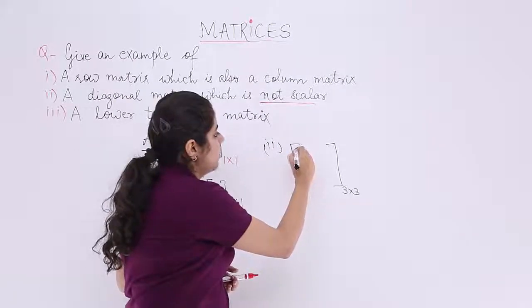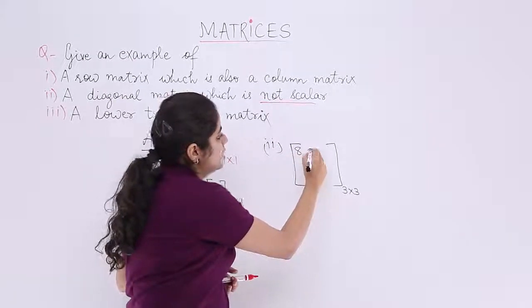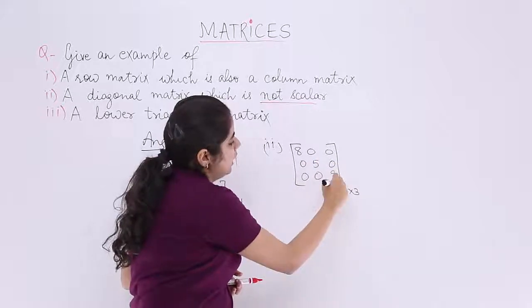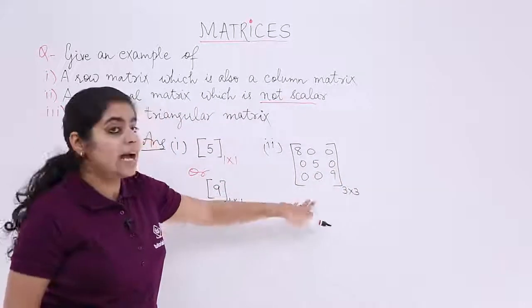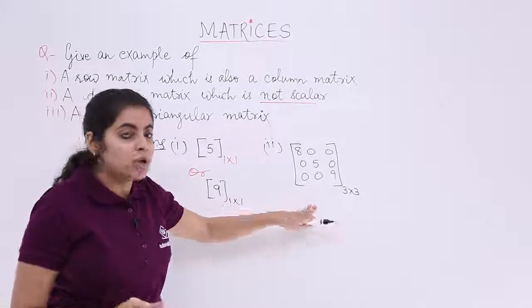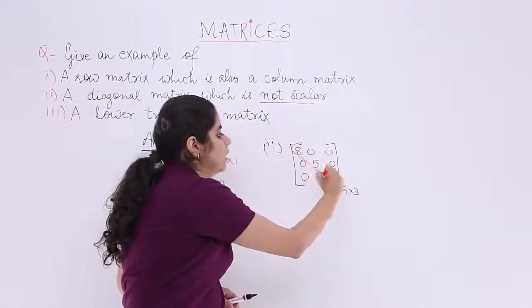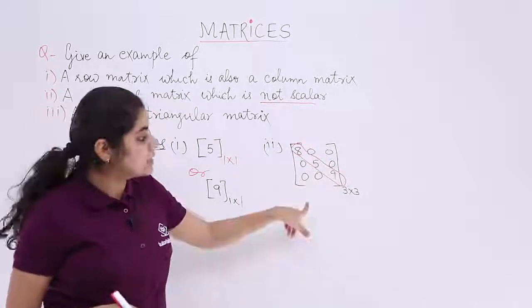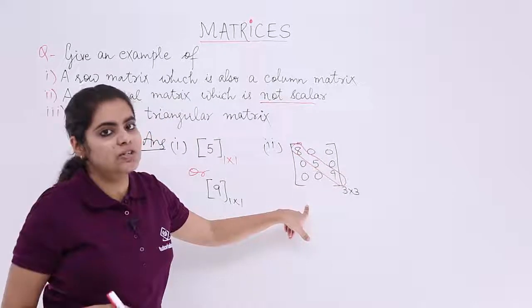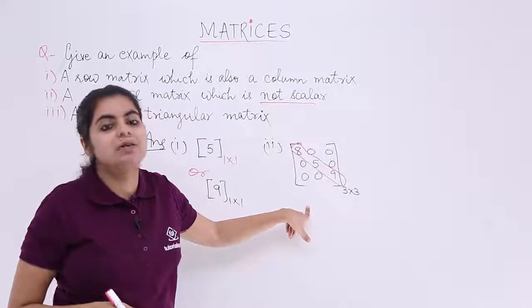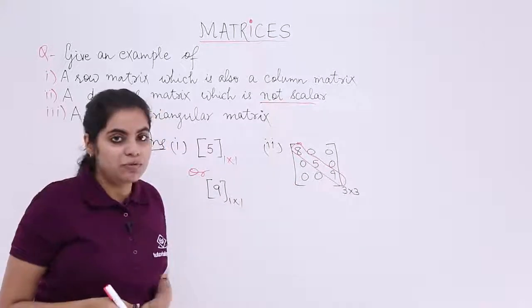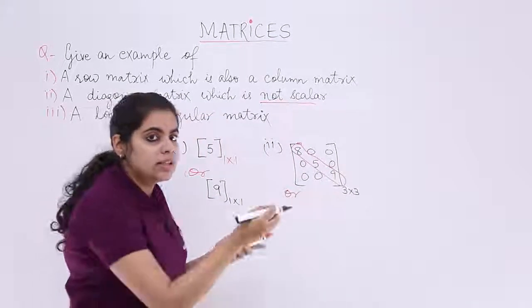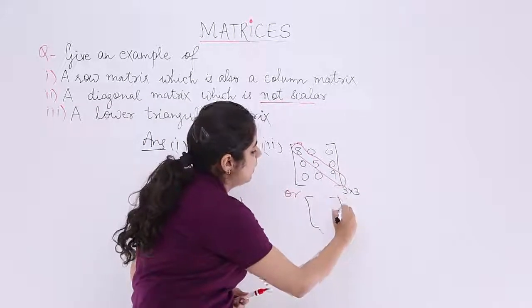The elements can be: 8, 0, 0 in the first row; 0, 5, 0 in the second row; 0, 0, 9 in the third row. Is this a diagonal matrix? Yes, because only the diagonal elements are non-zero and the rest are 0. Is this a scalar matrix? No, because the diagonal elements — 8, 5, and 9 — are not equal. So this type of example works.